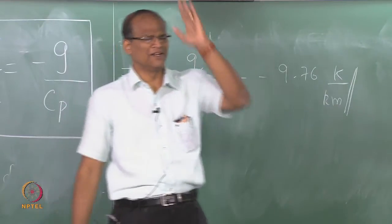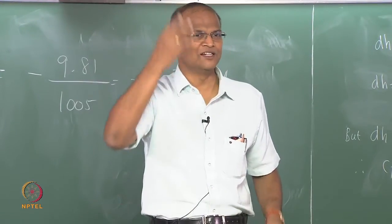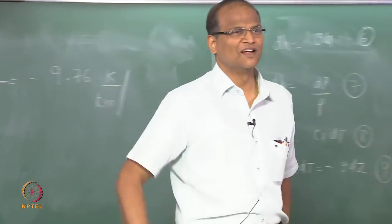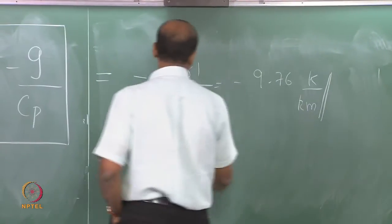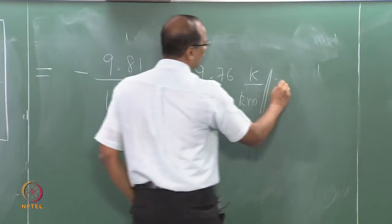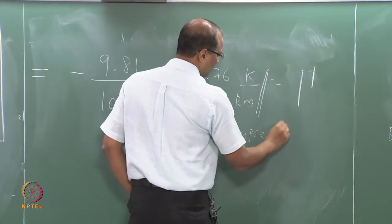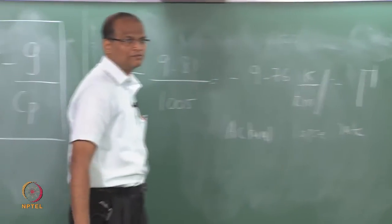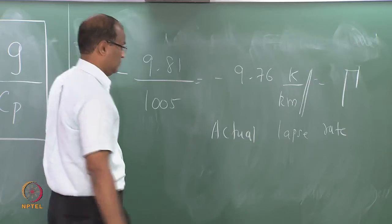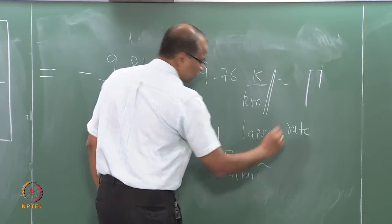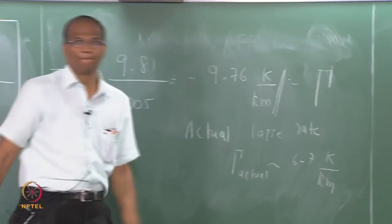This is the dry adiabatic lapse rate. Please note it is not applicable beyond the turbopause — it applies in the troposphere. Remember the general shape of the temperature-height profile. Temperature does not keep decreasing all the way to the sun — that is only in the troposphere. The actual lapse rate gamma is usually between 6 to 7 degrees Kelvin per kilometer.